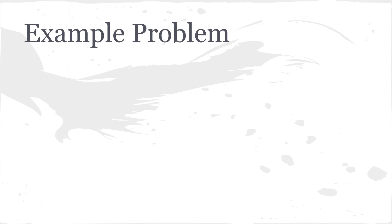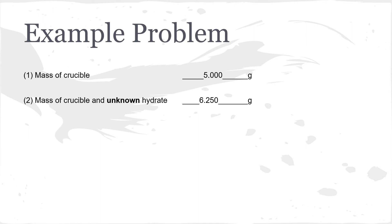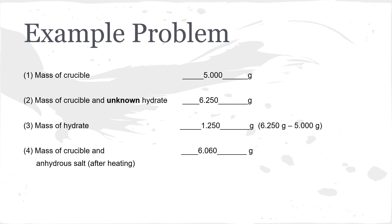Here's an example problem to walk you through what we'll be doing in the video and what you can expect on your notebook and report sheets. These numbers are just made up, so please do not write them in your report sheet. First, we'll find the mass of the crucible. Next, you'll find the mass of the crucible with the unknown hydrate — so we've added 1.25 grams, now we have 6.25 grams. Then you can find the mass of your hydrate by subtracting the mass of the crucible from the mass of the crucible with the hydrate. Next, we heat the hydrate and weigh the new mass of the crucible with the anhydrous salt.